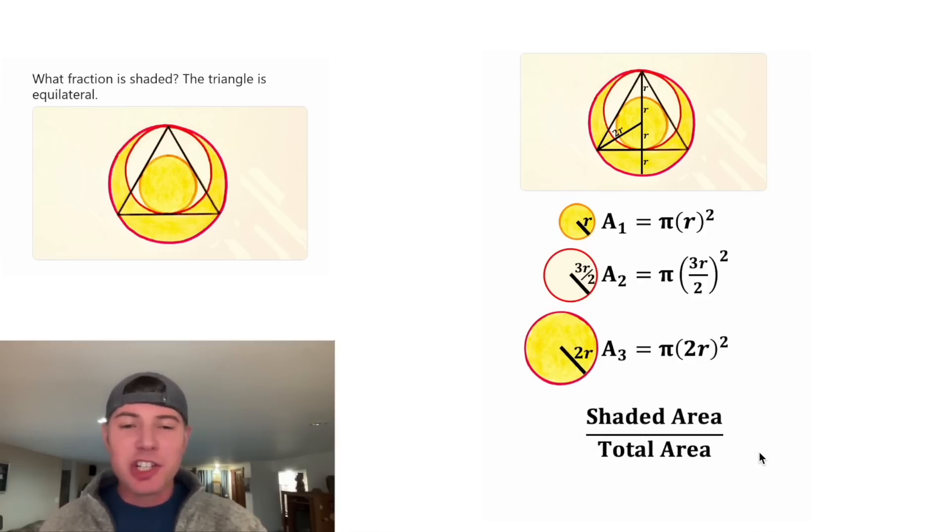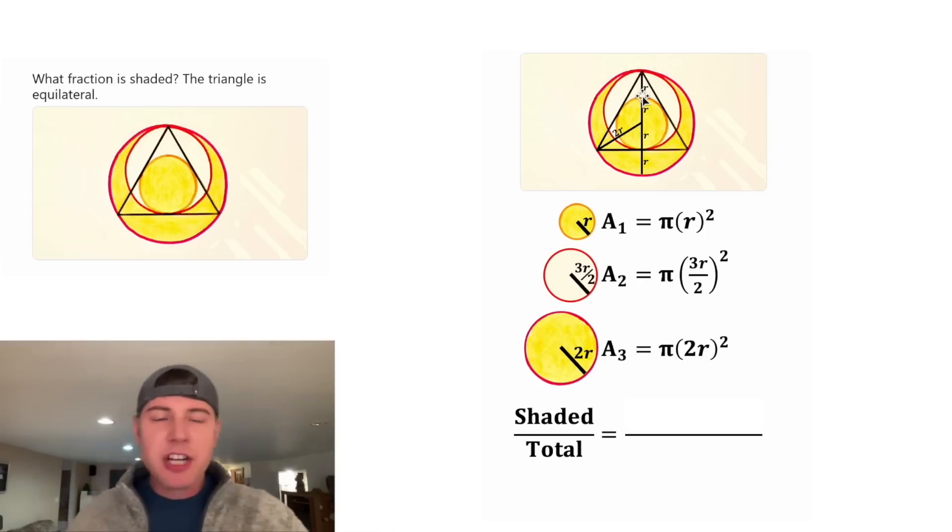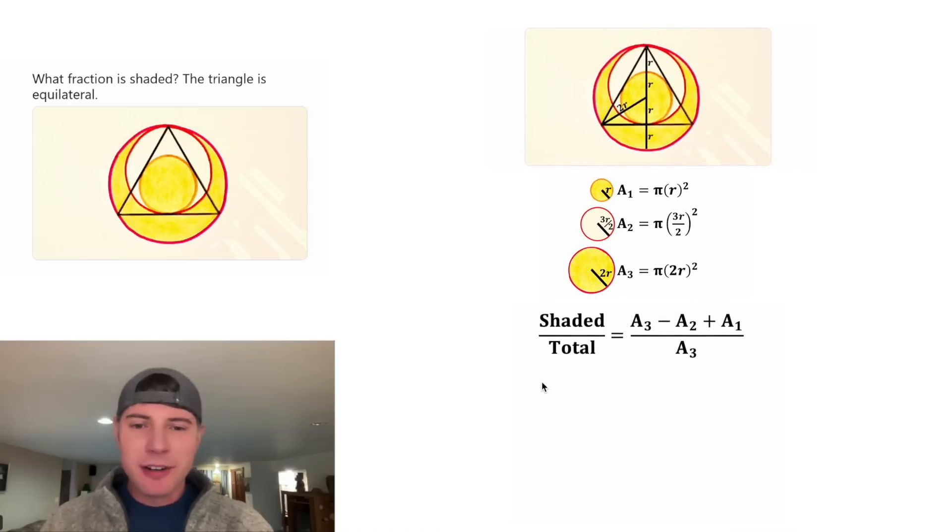Ultimately, the question is asking, what is the shaded area over the total area? And we can figure this out. The shaded can be represented by the large circle a₃ minus the medium circle a₂ plus the small circle a₁. And then the total is just the large circle a₃. So this is what we want to solve for. Let's copy it down, and let's give ourselves some space.